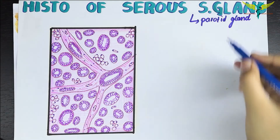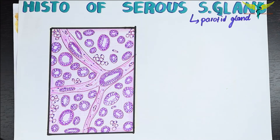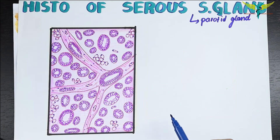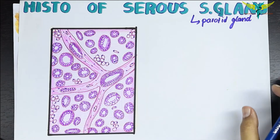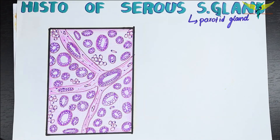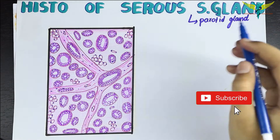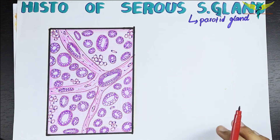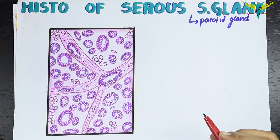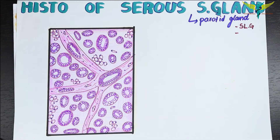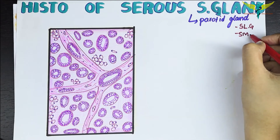If a gland contains only serous type of acini, it is called a serous type of salivary gland. If it contains only mucous type of acini, it is called a mucous type. If it contains both serous and mucous acini, it is called the mixed type. The parotid gland is serous, the sublingual gland is mucous, and the submandibular gland is mixed.